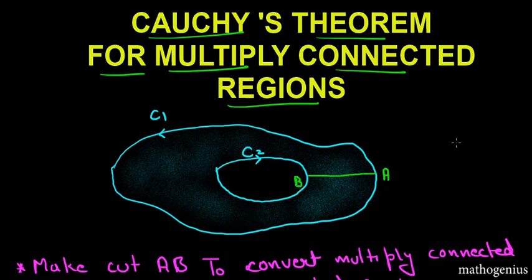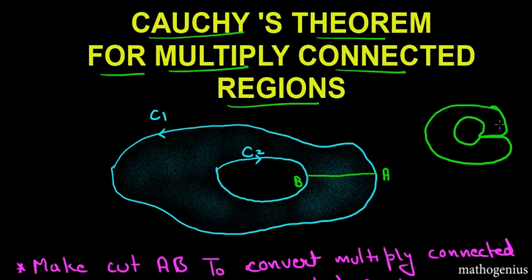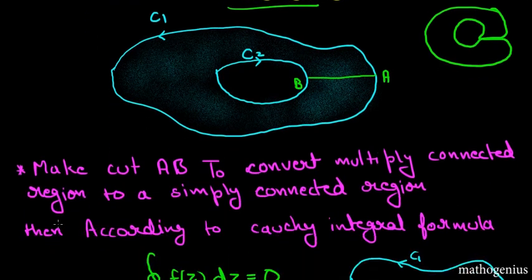After making the cut, this itself is now a simply connected region. So we converted a multiply connected region into a simply connected region. Now we integrate. Instead of the letter-by-letter naming used in most books, I will simply call the outer curve C1 and the inner curve C2, and use the cut from A to B and then B to A. This makes things simpler.